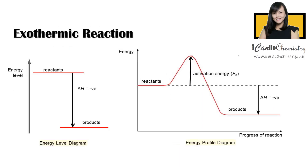Now let's focus on the exothermic reaction. On the left we have the energy level diagram, which you should already be familiar with. We are now targeting the energy profile diagram, which is most commonly what you need to complete or draw in exams. There are two main differences: the first is the presence of the x-axis, which represents the progress of reaction — unlike the energy level diagram, we include this horizontal axis.